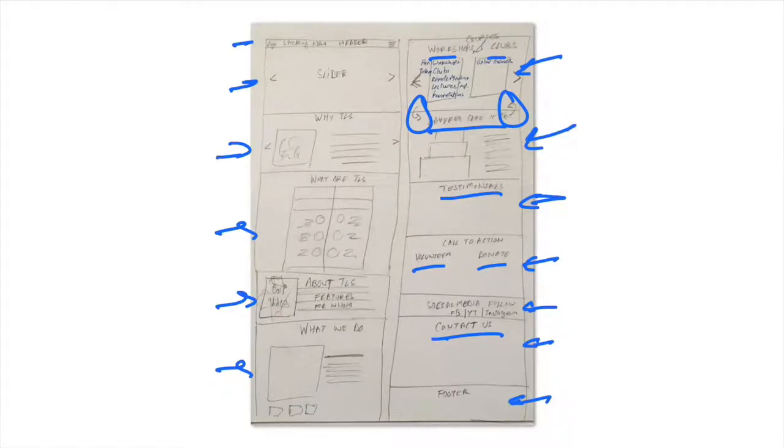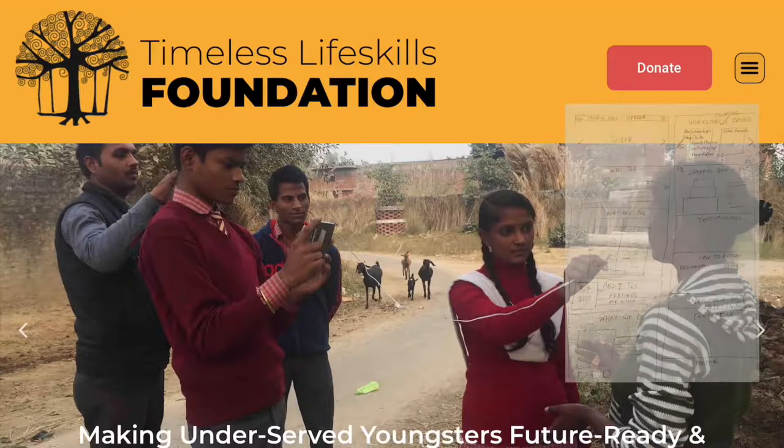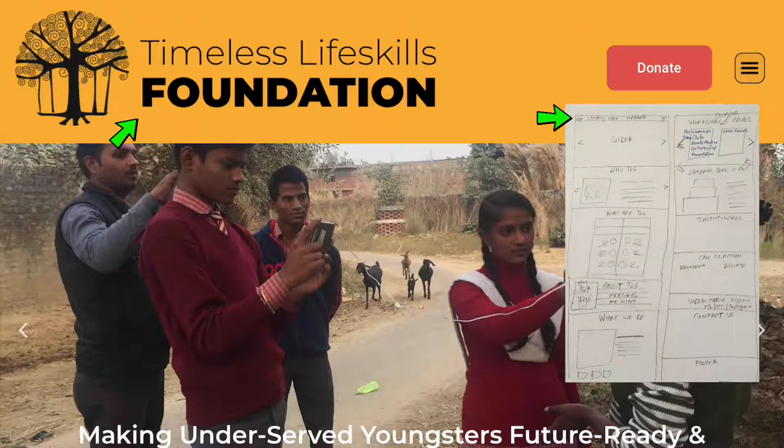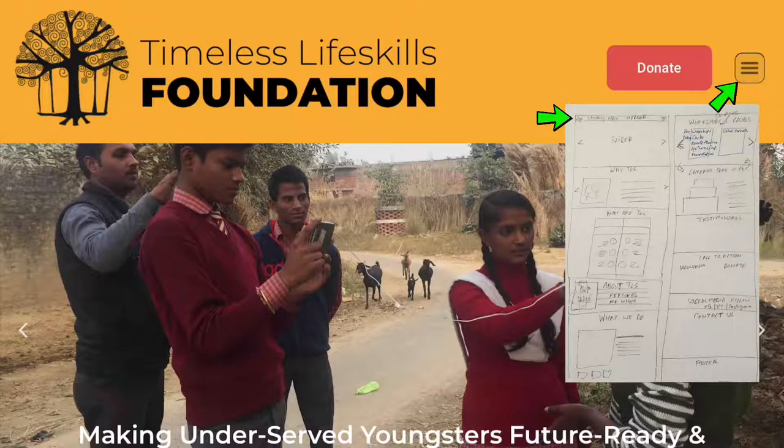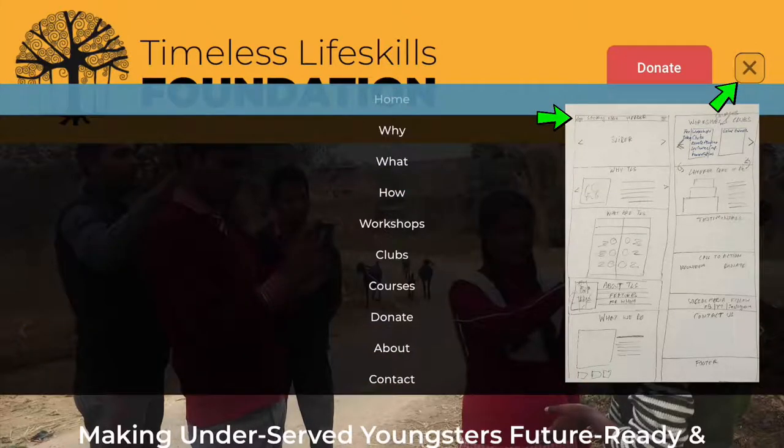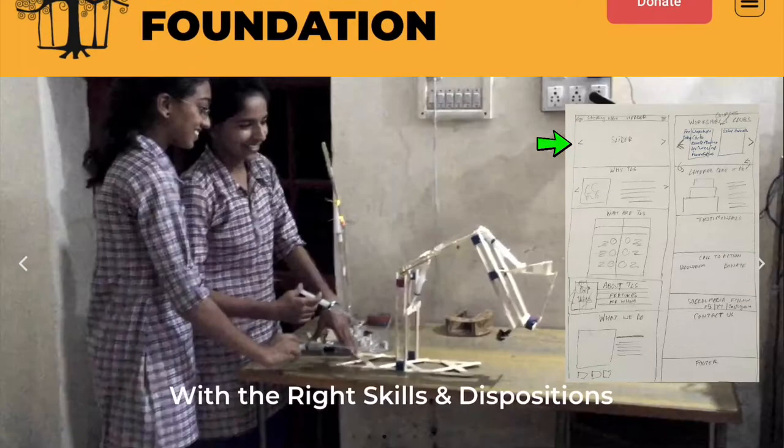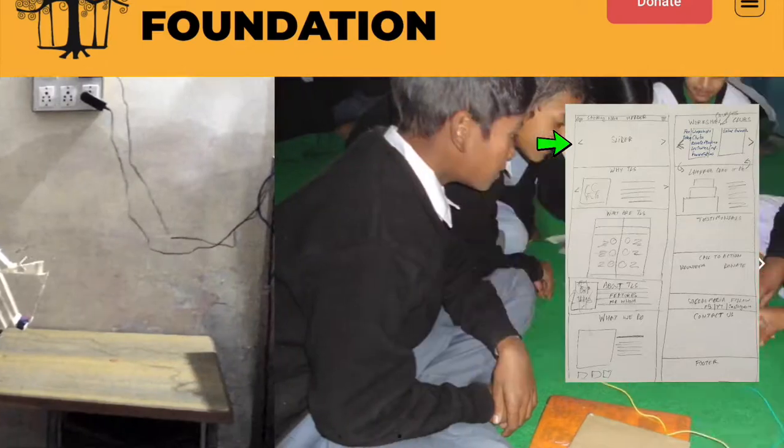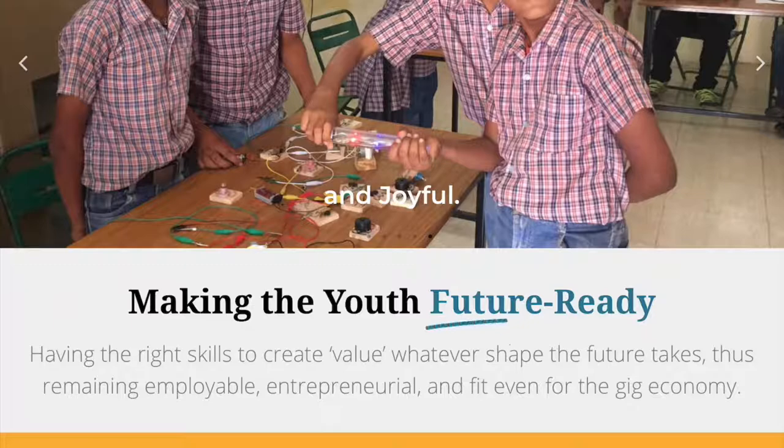So with this schematic and storyboard ready, let me show you how the final website looks like and how it aligns with this storyboard. So this is how the website looks: on the top there is our logo, the name, and the menu and navigation. And the navigation here is what is called the hamburger navigation, which looks better on small interface devices like smartphones and tablets. And if you click, it gives you all the sections on this page. Then we have the sliders, and the sliders are five large images that explain the essence of Timeless Life Skills. And then, of course, if you scroll down, here is a big message saying what Timeless Life Skills Foundation does is make the youth future ready.